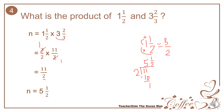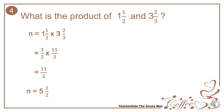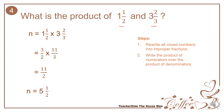To summarize the steps in multiplying mixed numbers: step 1, convert all mixed numbers to improper fractions; step 2, write the product of the numerators over the product of the denominators; step 3, reduce if needed by removing the greatest common factor between the numerators and denominators.